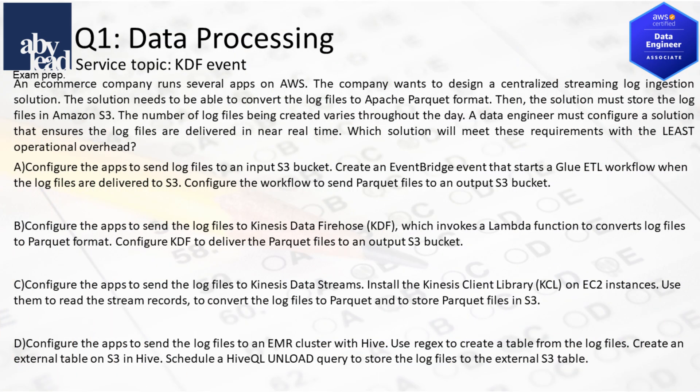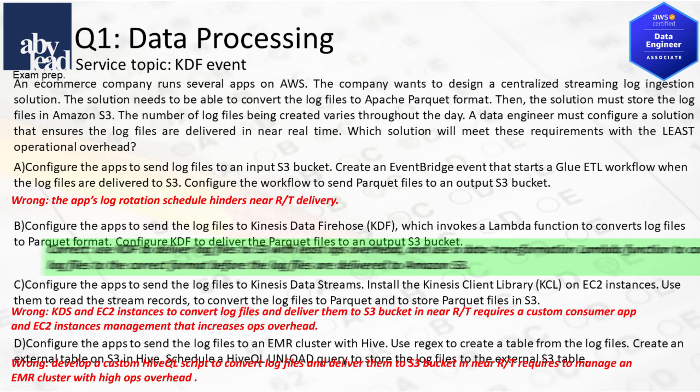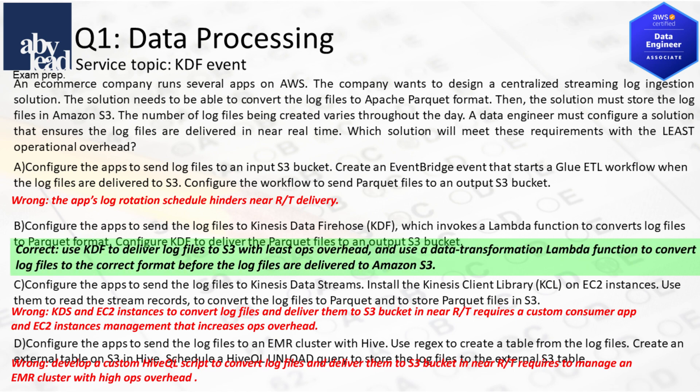Question 1: How do you realize streaming log ingestion with conversion to Parquet and store in S3 with least overhead? Applying a log rotation schedule hinders near real-time, and an EC2 custom app to convert log files increases overhead. A custom EMR HiveQL script to convert log files also generates overhead. Better is to send logs via Kinesis Firehose with Lambda conversion before delivery to S3.